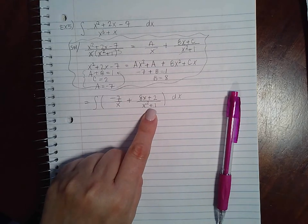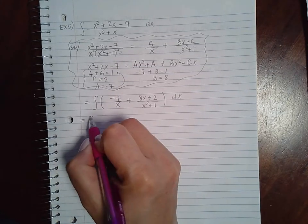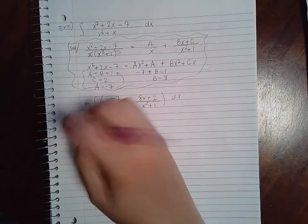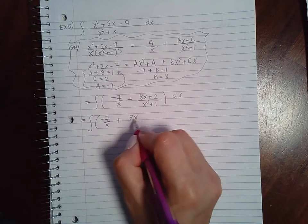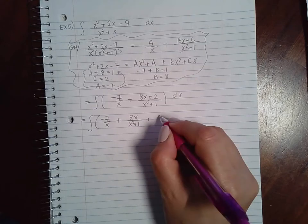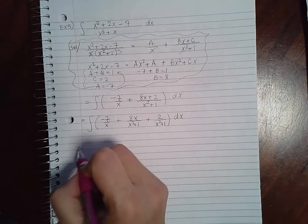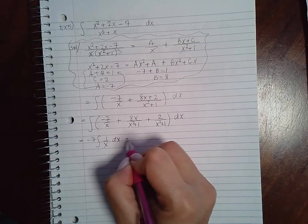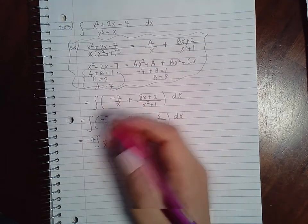So I'm going to go ahead and separate this fraction. Oops, I meant to draw parenthesis. And then I'm going to separate each one and I'm going to take out the constants. Actually, I'm going to cleverly take out this constant.